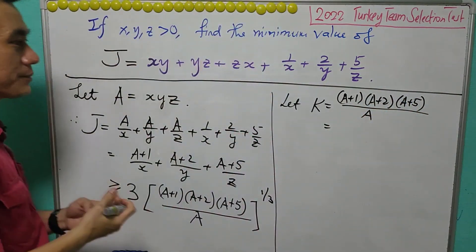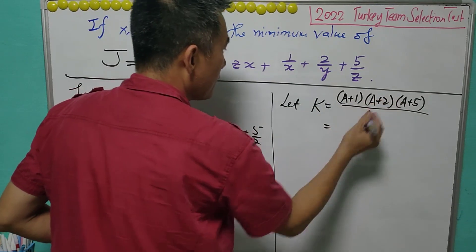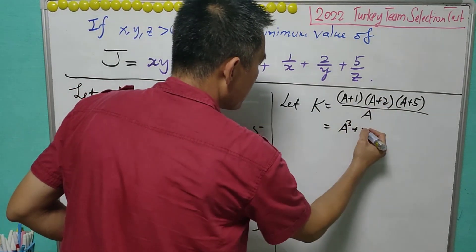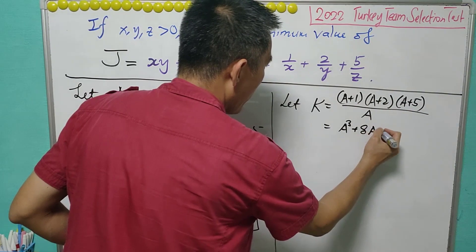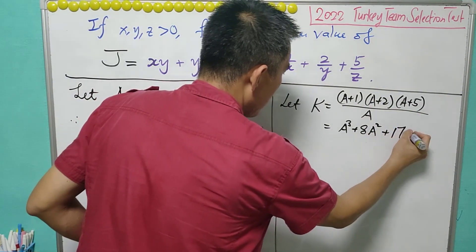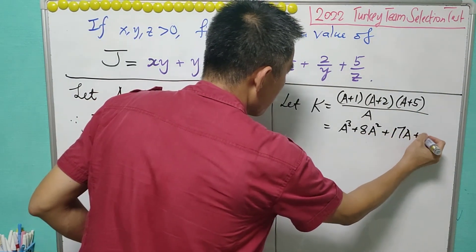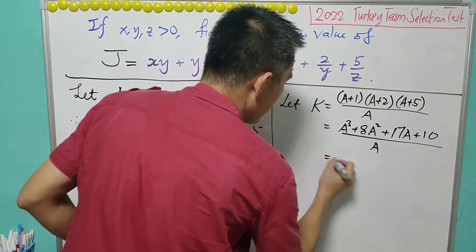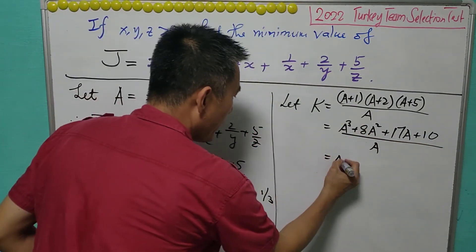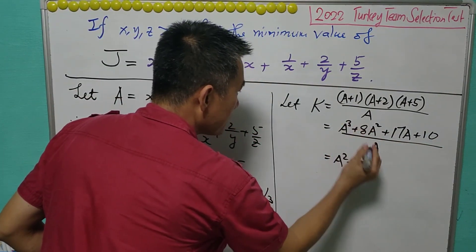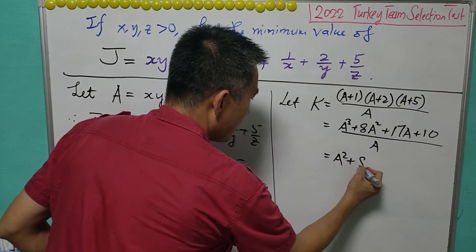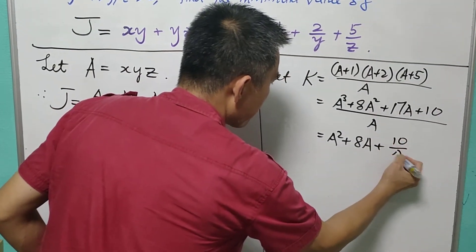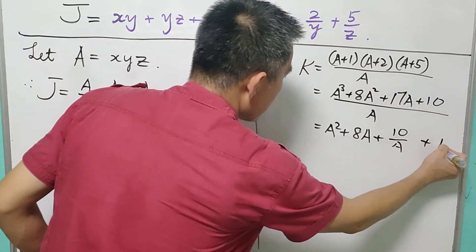After we expand this, it becomes A³ plus 8A² plus 17A plus 10, all over A. This simplifies to A² plus 8A plus 10 over A, plus 17.